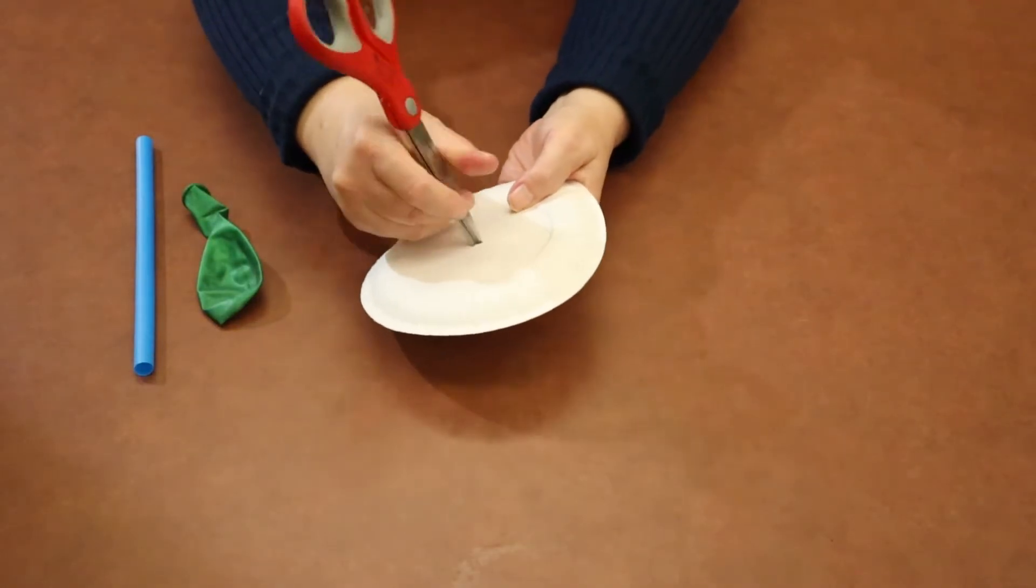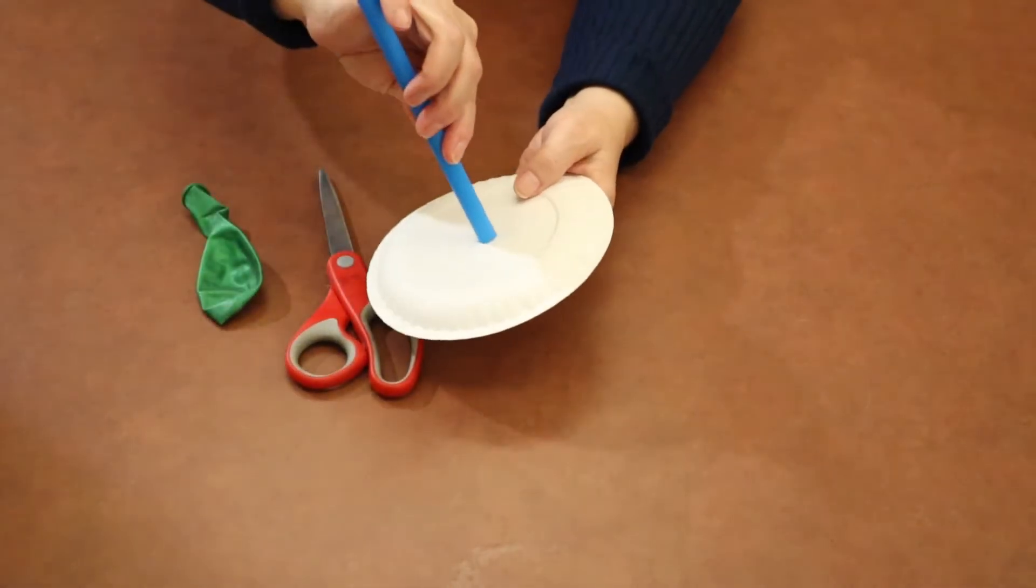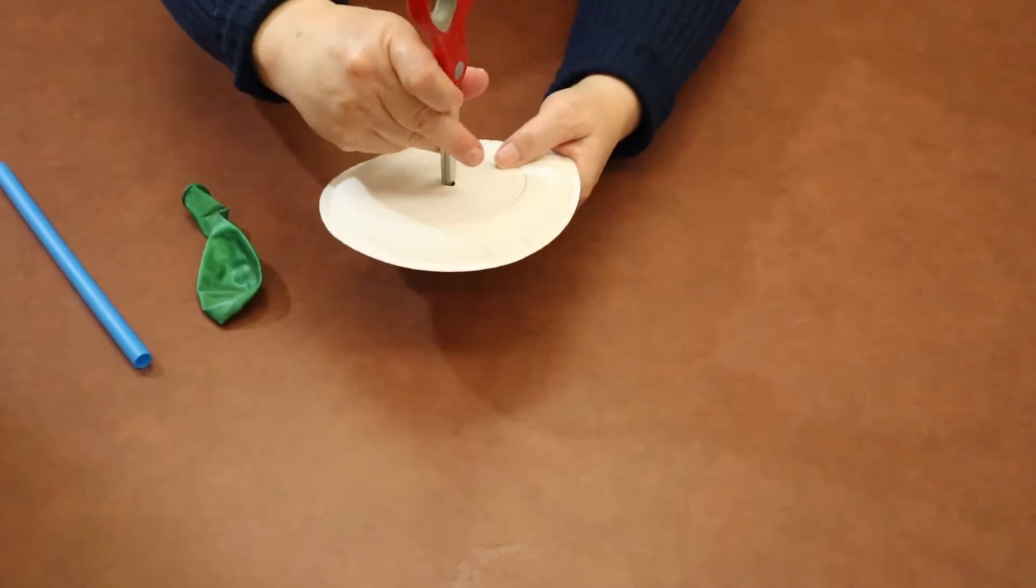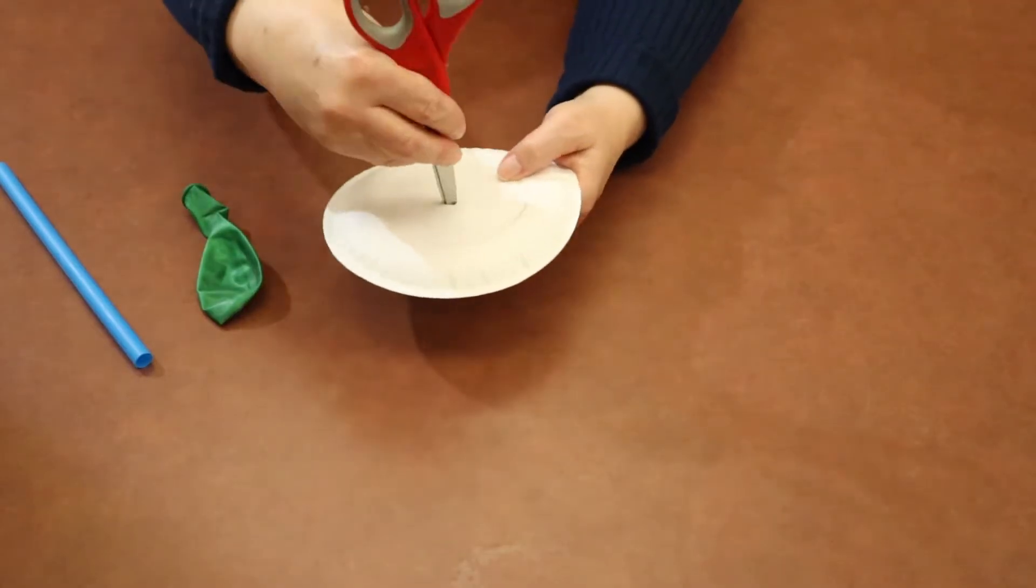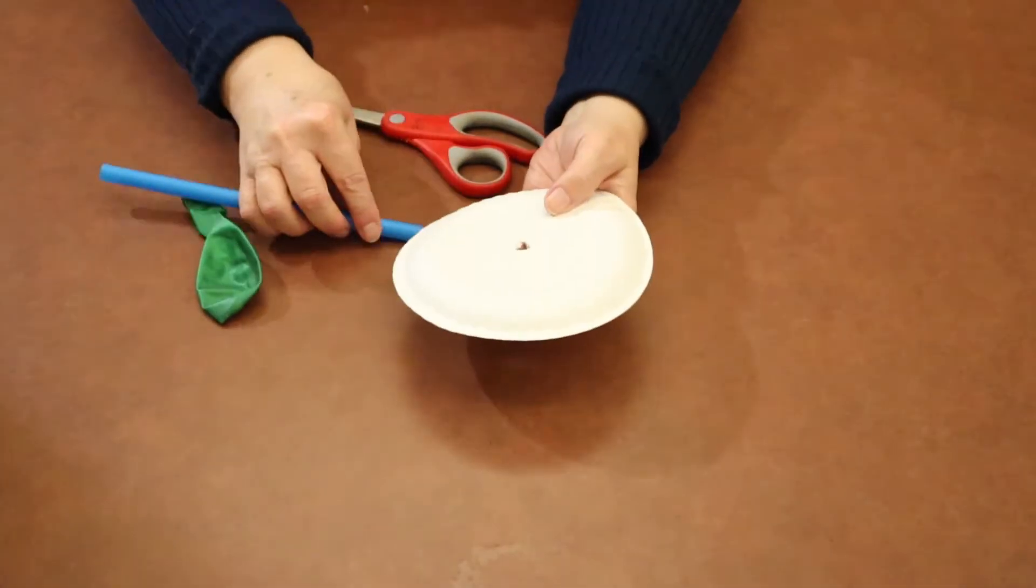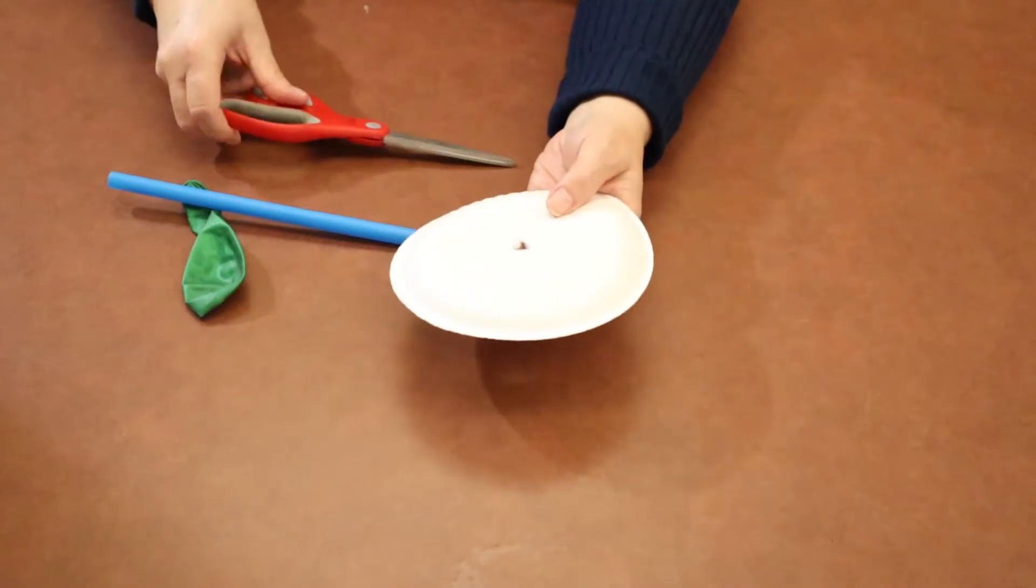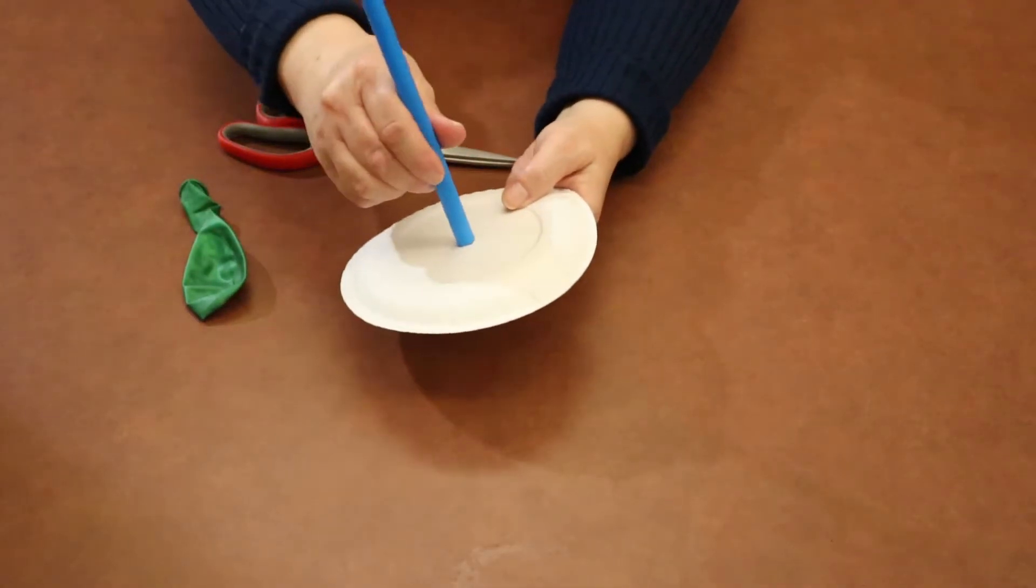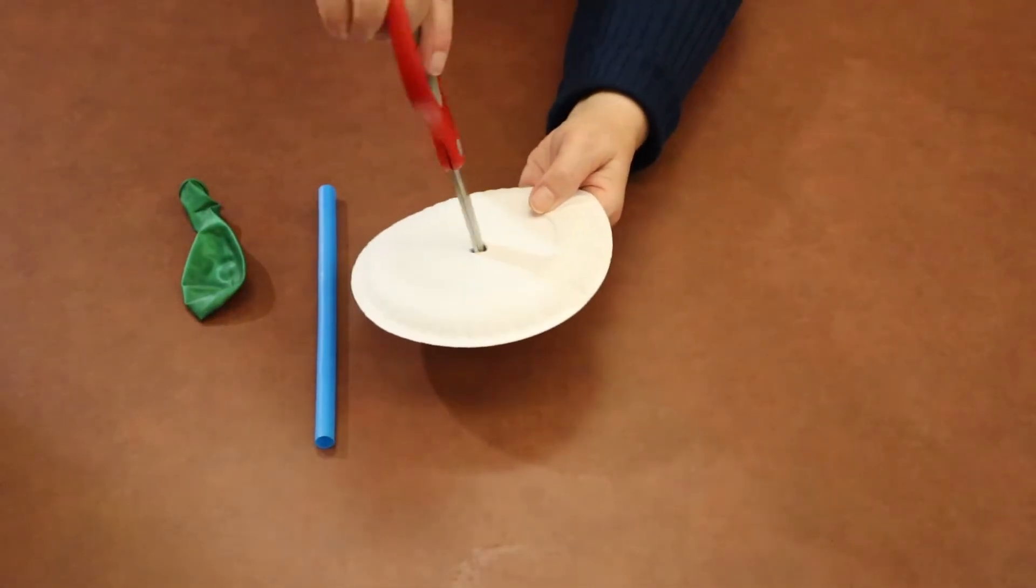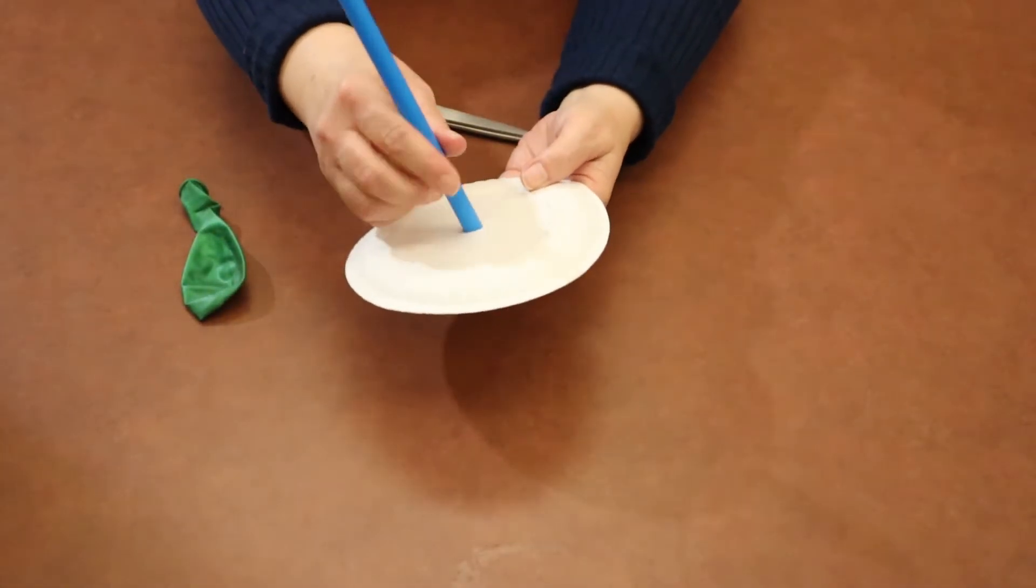Use caution when you're doing that because scissors are sharp. You want to make sure and get your hole big enough for the straw to poke through, but not so big that you have area around the straw. Keep working your scissors until you can slide your straw through your plate.